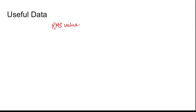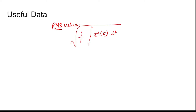The RMS value is the root mean square value. First, you take the square of the signal, then you take the mean of the signal over a time period, and then you take the root. This gives the RMS value of the signal.